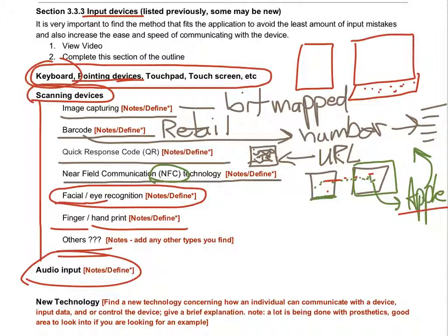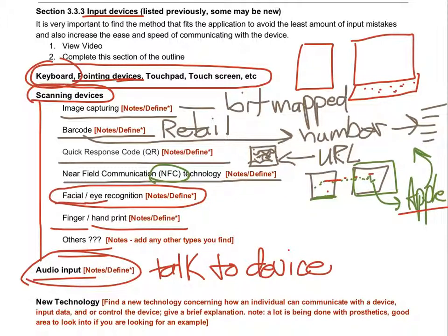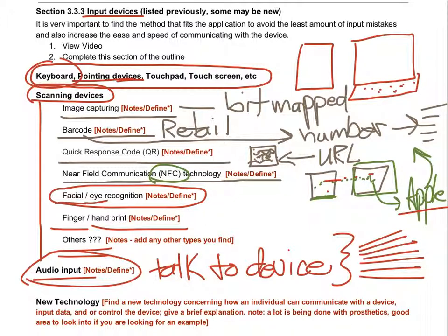There's also audio input — you can talk to the device, or sounds can tell it what to do. There are a lot of cool ways this is improving in terms of hands-off functioning with devices. There's also new technology around how people get prosthetic limbs to move. You could probably have a whole course just on input devices, but this is enough for us to know right now to move forward.